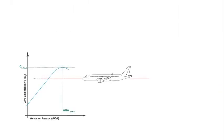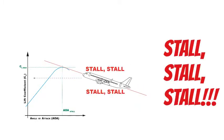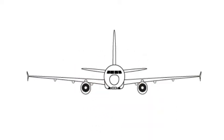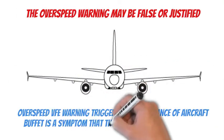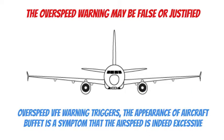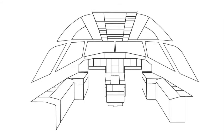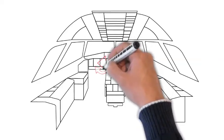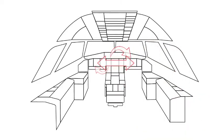Note: Rely on the stall warning. Erroneous airspeed data does not affect the stall warning because the stall warning is based on AOA data. Note: Depending on the situation, the overspeed warning may be false or justified. When the overspeed VFE warning triggers, the appearance of aircraft buffet is a symptom that the airspeed is indeed excessive. Crew coordination is important. The PM should confirm any discrepancy: first, between the standby airspeed indication and the speed indication on his/her PFD; and second, between his/her PFD and the pilot flying's PFD.